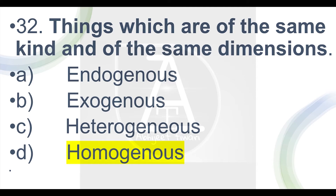Option C is 'heterogeneous' and option D is 'homogeneous.' Wherever the prefix 'hetero' appears, it means different. Wherever 'homo' appears, it means same. So heterogeneous means things of different kinds and different dimensions. The correct answer is option D — homogeneous — meaning things which are of the same kind and same dimension.